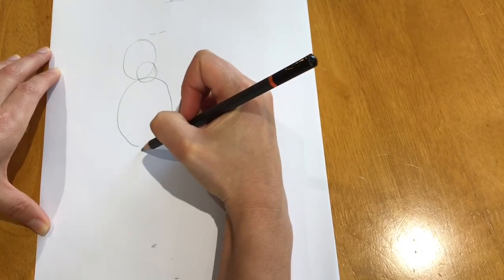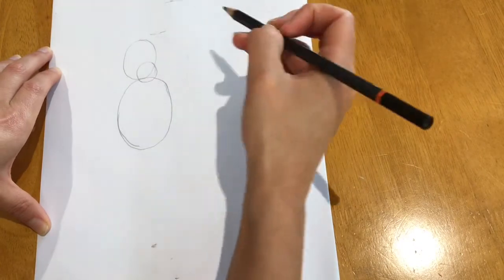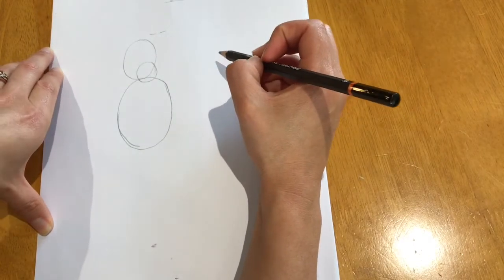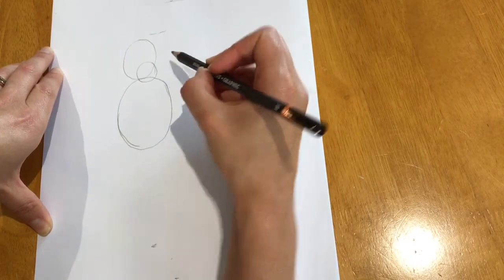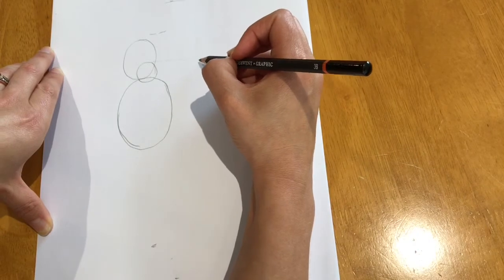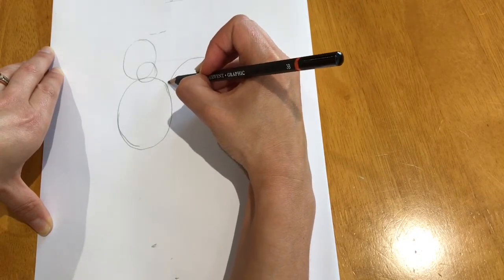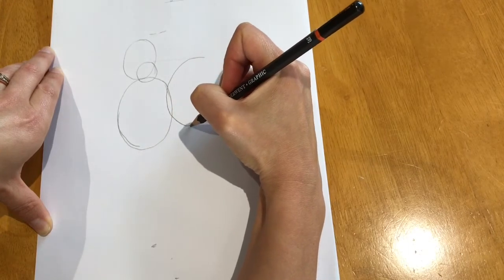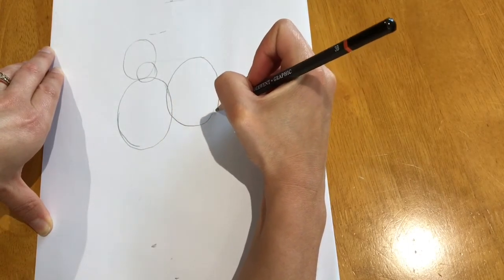Now remember this doesn't have to be perfect. As you can see my oval shapes going all over the place but don't worry about correcting it, it's fine. We're going to draw another oval shape which is going to be slightly higher. I'm going to do it in line with this little circle and slightly to the right as well.